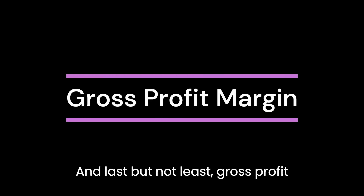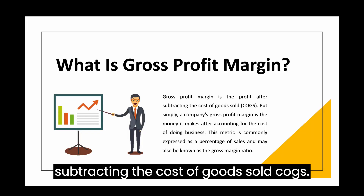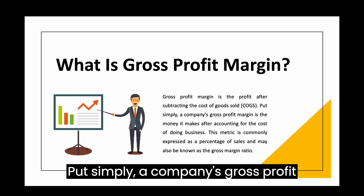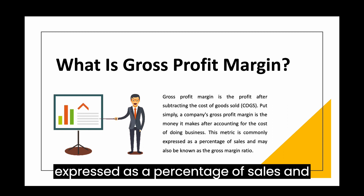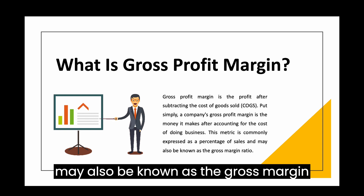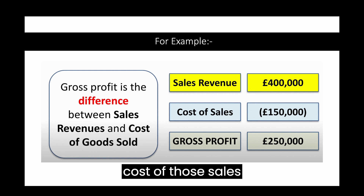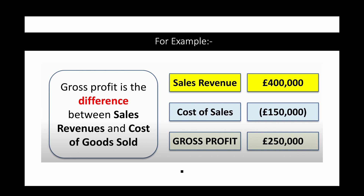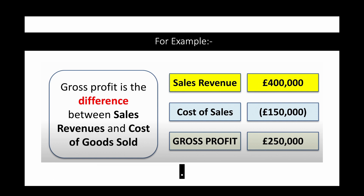Last but not least, gross profit margin. Gross profit margin is the profit after subtracting the cost of goods sold (COGS). Simply put, a company's gross profit margin is the money it makes after accounting for the cost of doing business, and is commonly expressed as a percentage of sales — also known as the gross margin ratio. For example, if sales revenues are £400,000 and the cost of those sales is £150,000, then the gross profit is £250,000. That is not the total profit of the business, because we need to take off other costs such as overheads, but it is a really important measure of profitability.